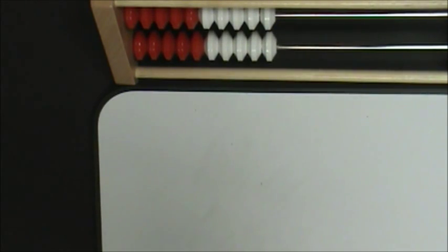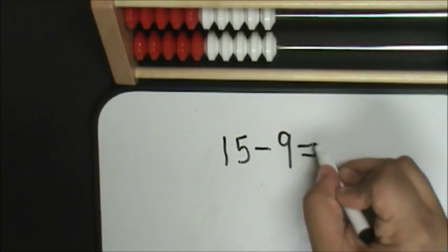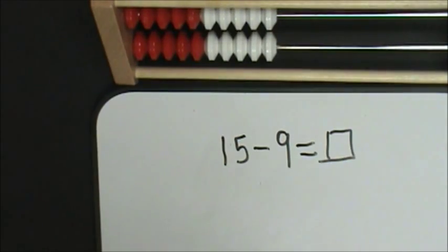A Reckon Rec can also be used to help students subtract by using addition. For example, let's say we have 15 minus nine. First, the student will represent nine.